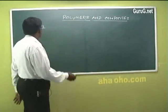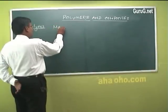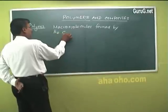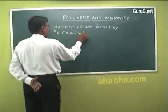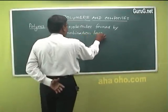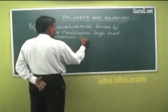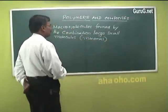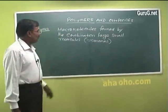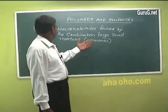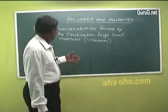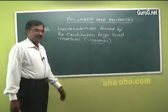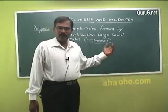Let us see what we mean by polymer. A polymer is a macromolecule having very high molecular weight, formed by the combination of a large number of small molecules which are called monomers. The small molecules combined to form a polymer are called monomers and they have very low molecular weight.